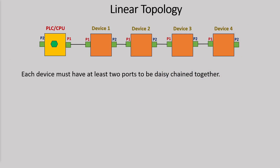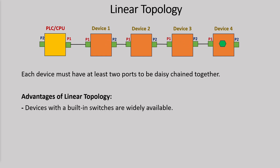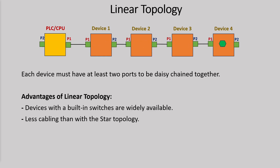The next is linear topology. In this topology, devices are simply daisy-chained, so each device must have at least two ports, which means each device has to have an integrated Ethernet switch. Advantages of linear topology are that devices with built-in switches are widely available, just like all AMCI network devices. It also requires less cabling than star topology — you don't have to drag cables all the way back to the Ethernet switch; you simply find the next available device and daisy-chain it. External switches are optional if you want to extend the network.